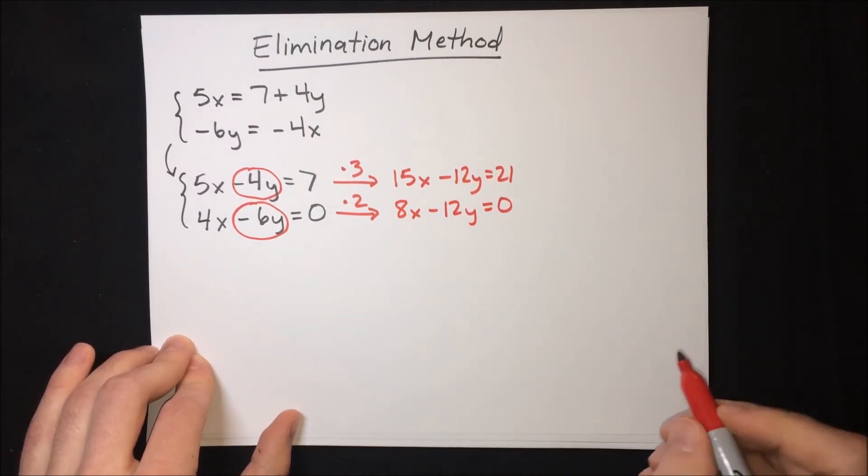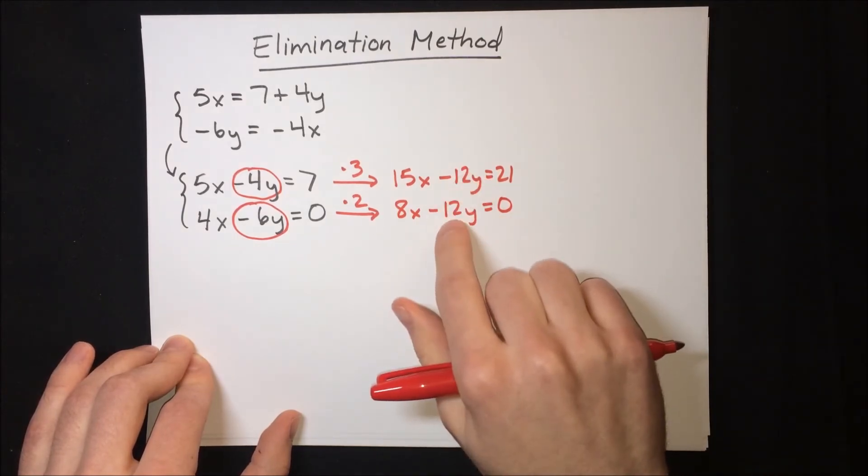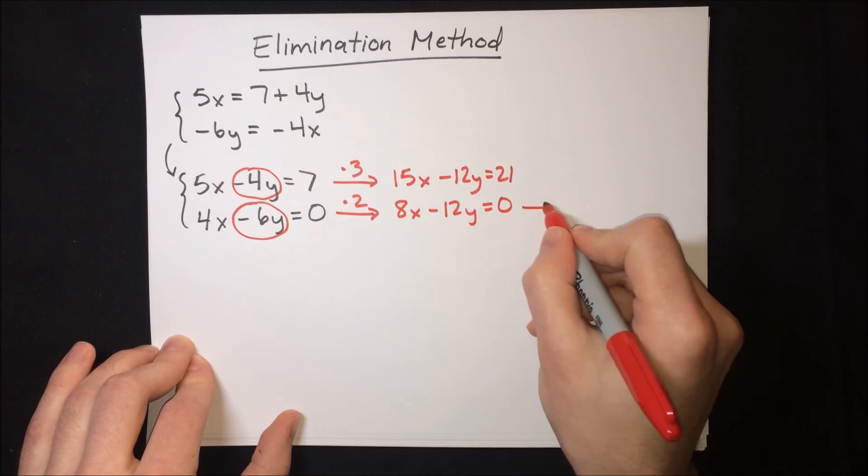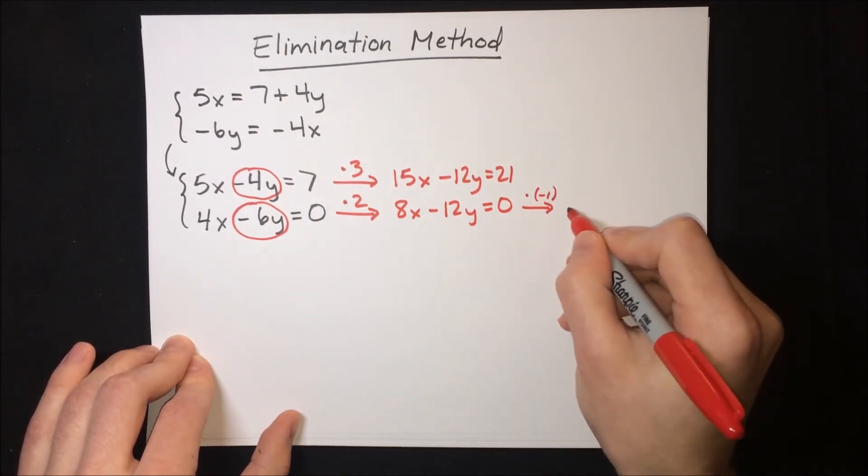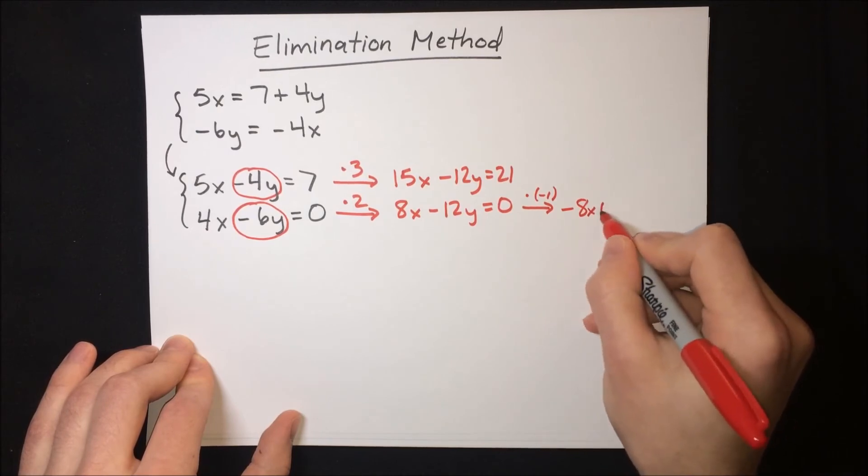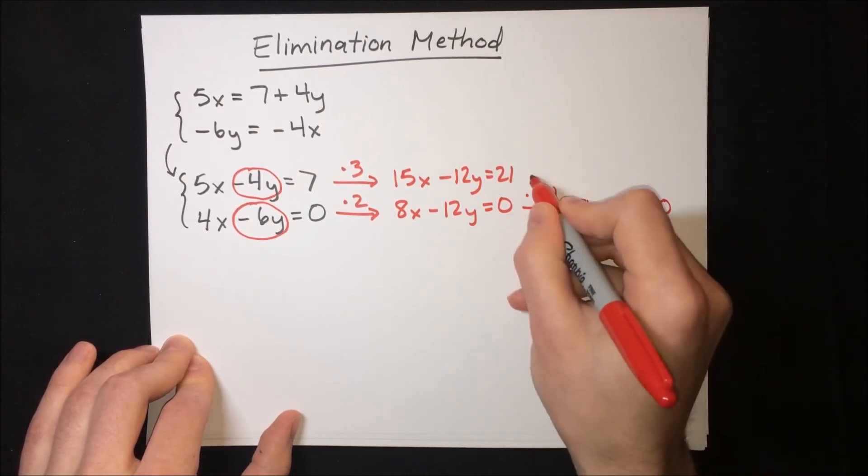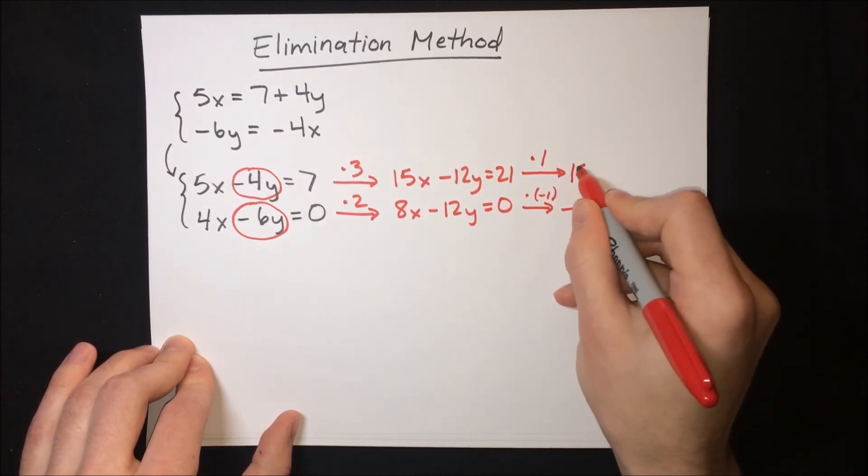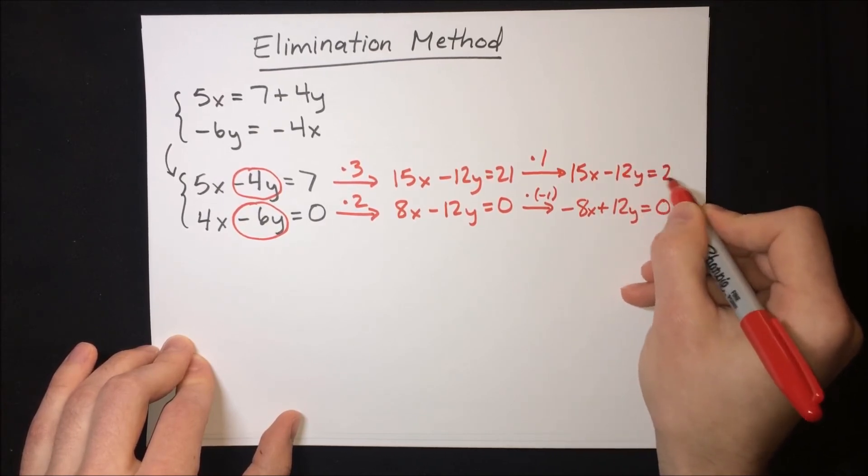Now we can multiply one more time because we want one of these 12s to be a positive 12 and the other to be a negative 12. Why don't we make the bottom one be a positive 12. So multiply by negative 1 here to get negative 8x plus 12y equals 0. And then in the top we'll multiply by 1, keep it the same, 15x minus 12y equals 21.